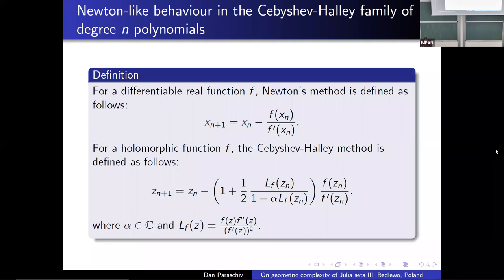The most well-known numerical method is Newton's method for real numbers. This method has been used to generate complex dynamical systems, and especially its applications to polynomials are very well known. We are going to study the family of methods called Chebyshev-Halley, which is defined as follows. Generally, these methods have order of convergence three, compared with Newton's which is two, except for one parameter which has order of convergence four. For alpha equal to zero this is Chebyshev's method, for alpha equal to one-half this is Halley's method, and for alpha equal to one this is known as the super-Halley method. Observe that as alpha approaches infinity, the Chebyshev-Halley method resembles Newton's method.